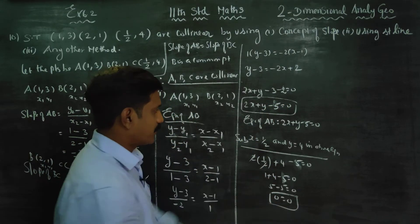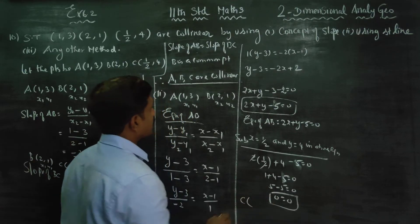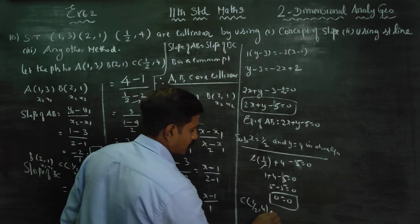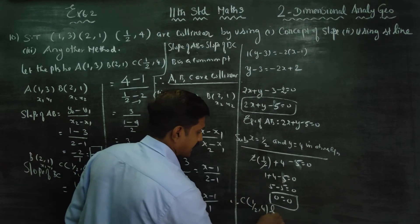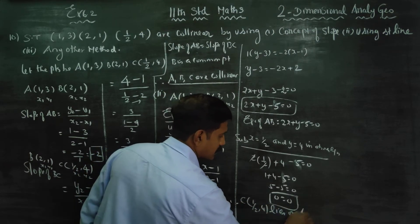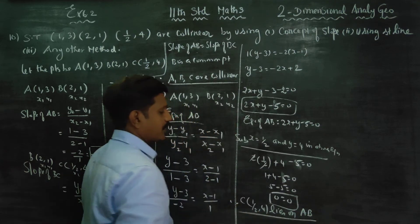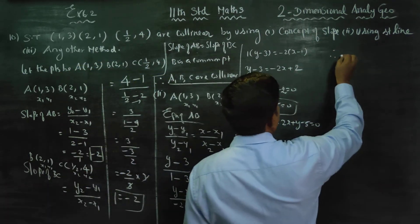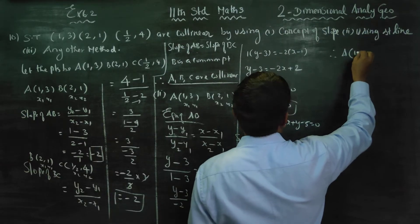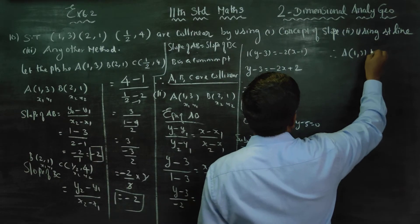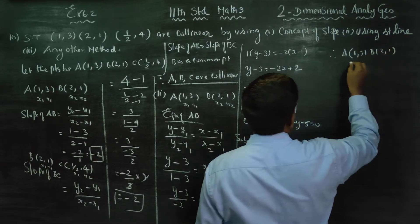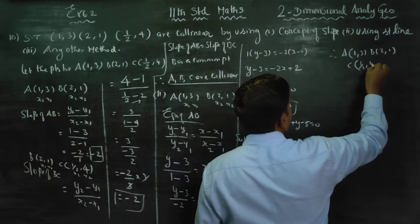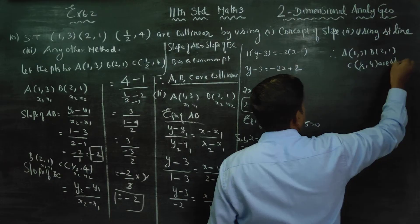Therefore 0 is equal to 0, which means C(1/2, 4) lies on the line AB. Since C lies on straight line AB, therefore A(1,3), B(2,1), and C(1/2, 4) are collinear.